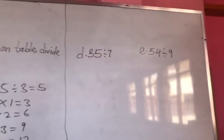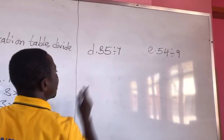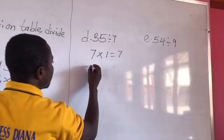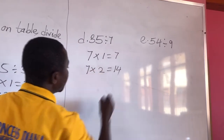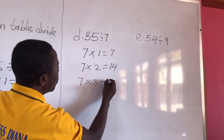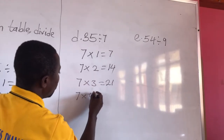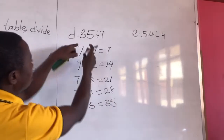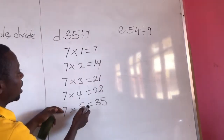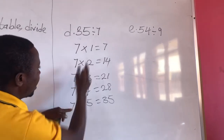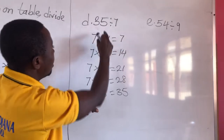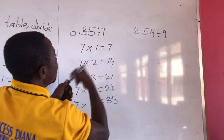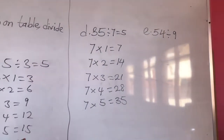Now let's look at the next example. We have 35 divided by 7. So this one uses the 7 times table. 7 times 1 is 7, 7 times 2 is 14, 7 times 3 is 21, 7 times 4 is 28, 7 times 5 is 35. We have our dividend which is 35. We continue to multiply until we get the dividend, and the number we multiply by the divisor to get the dividend is the answer. So 35 divided by 7 is equal to 5.